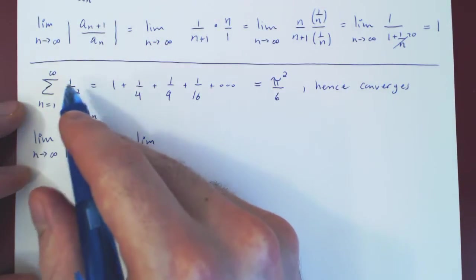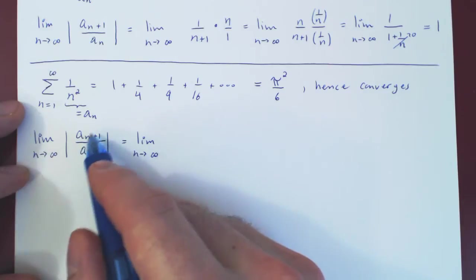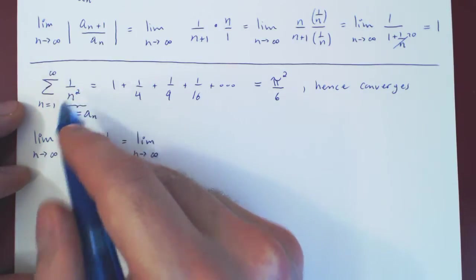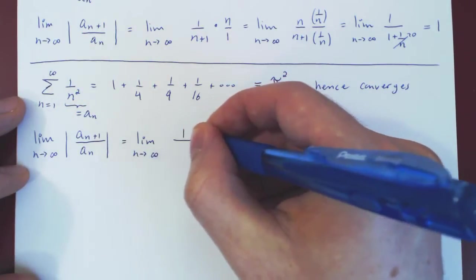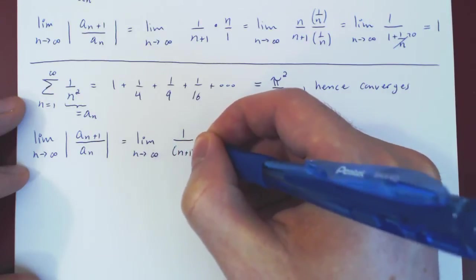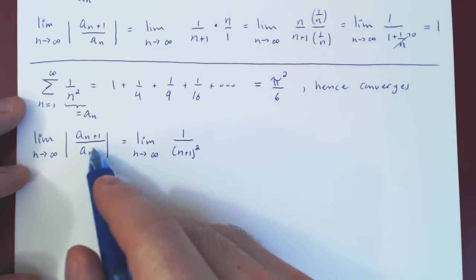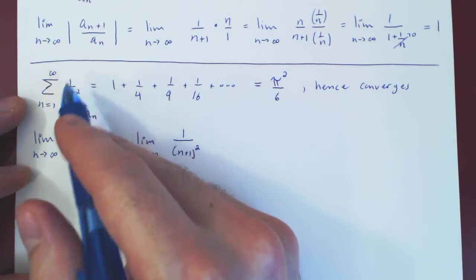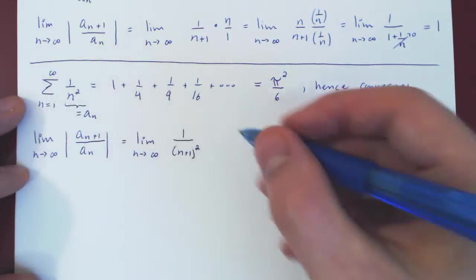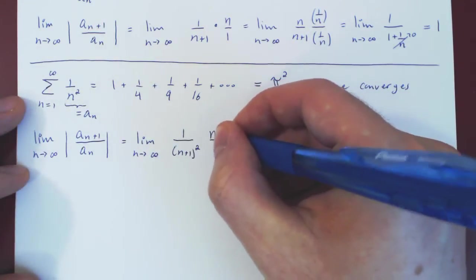And if a_n is 1 over n squared, a_{n+1} is 1 over (n+1) squared. And if we divide by a_n, we divide by 1 over n squared, so we multiply by the reciprocal, n squared over 1.